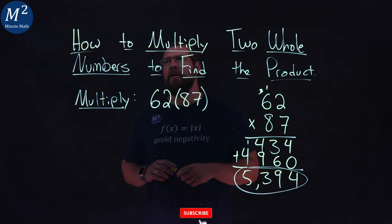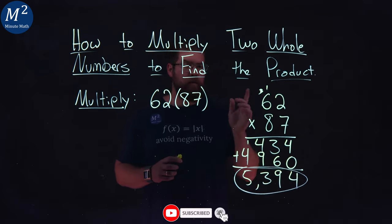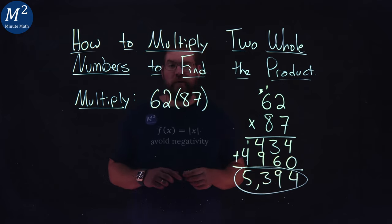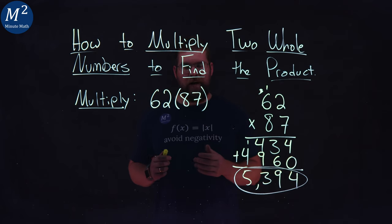And there we have it, using the traditional method we found that 62 times 87 is 5,394. I hope you learned something here on how to multiply two whole numbers to find the product. If you did, make sure you subscribe to this YouTube channel and like this video.